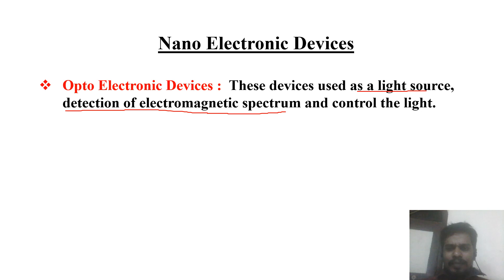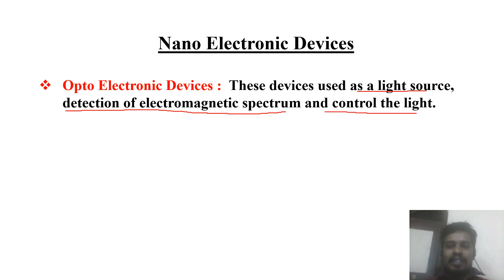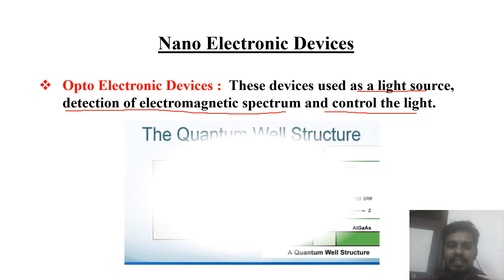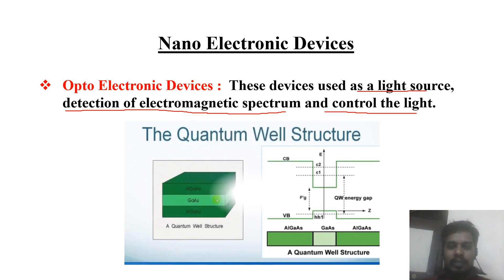Some optoelectronic devices are used as light sources. For example, there are laser sources using semiconductor quantum well structures as well as quantum dot lasers. Some devices are also used for controlling light. Looking at laser sources, they have quantum well structures — look at this example.